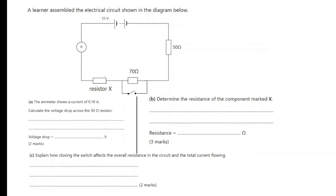A learner assembled the electrical circuit shown in the diagram below. We can see there is a 15 volt battery, an ammeter, resistor X, a 70 ohm resistor and a 50 ohm resistor, and there is a switch connected in parallel with the 70 ohm resistor, which is in the open position as of now.